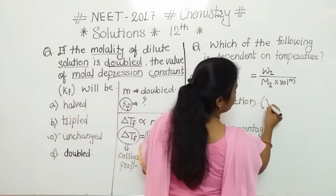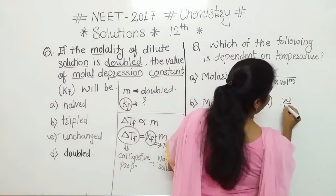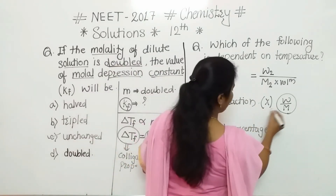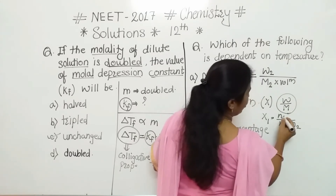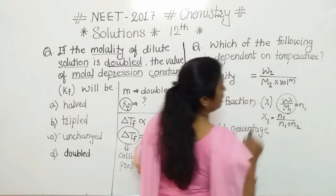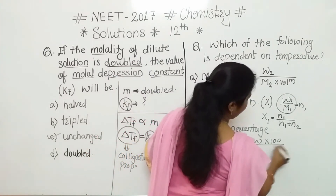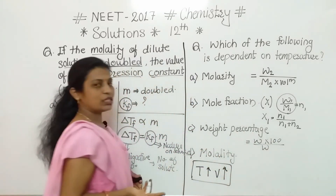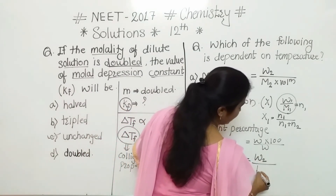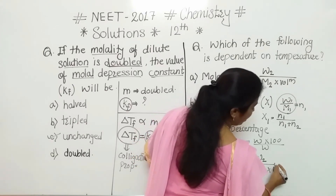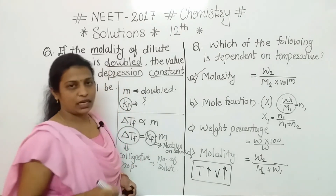Mole fraction, denoted by symbol X, is the ratio of number of moles: X1 equals N1 divided by N1 plus N2, where N1 is W1 divided by M1 — mass by molar mass. Weight percentage is weight into 100 divided by weight of solution — again weight by weight. Molality is mass of solute divided by molar mass of solute into mass of solvent — again all mass terms. So out of the four options, option A — molarity — is the correct one.